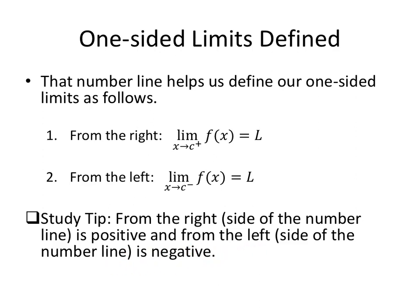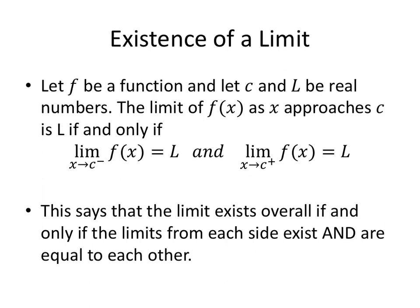Let's take a look at some examples. First we need to know when a limit exists. Let f be a function and let C and L be real numbers. The limit of f of X as X approaches C is L if and only if the limit as X approaches C from the left of f of X equals L and the limit as X approaches C from the right of f of X equals L.